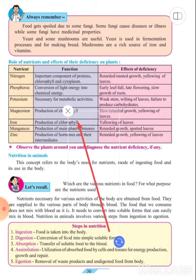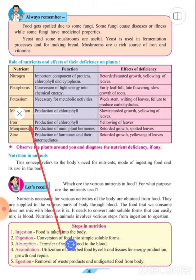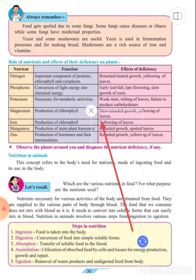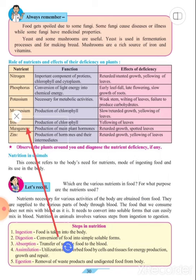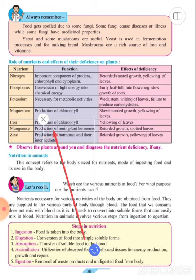The next is iron. The function is production of chlorophyll. Iron is necessary for chlorophyll production. If there is a deficiency, we observe yellowing of leaves.